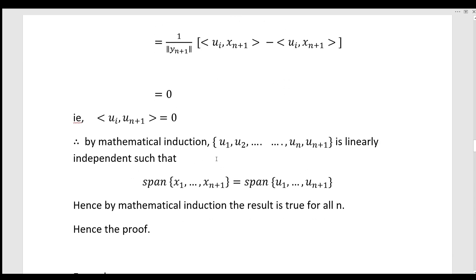By mathematical induction, the set {u1, u2, ..., un, u(n+1)} is orthonormal, and the span of {x1, x2, ..., x(n+1)} equals the span of {u1, u2, ..., u(n+1)}. Hence, by mathematical induction the result is true for all n. Hence, the proof.